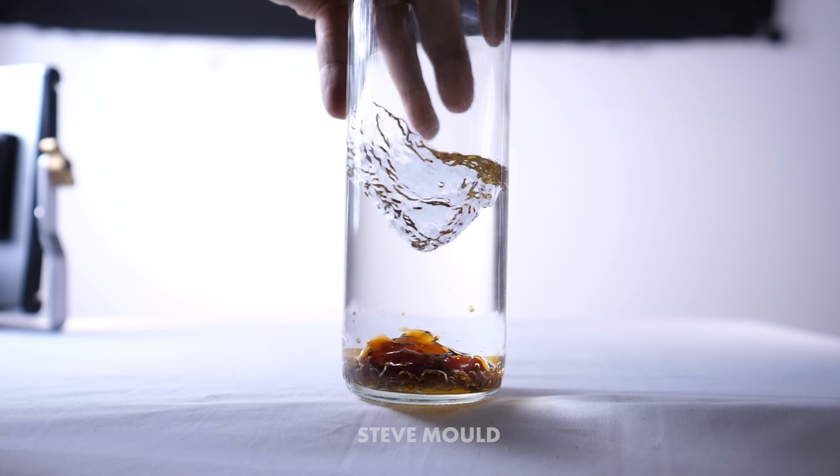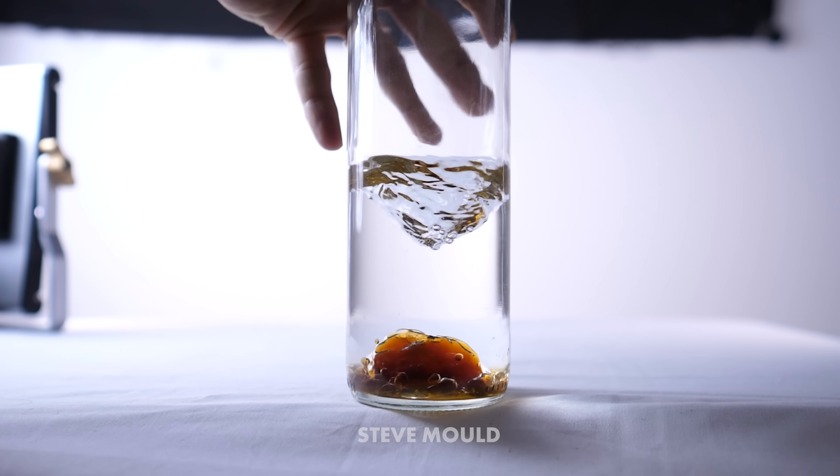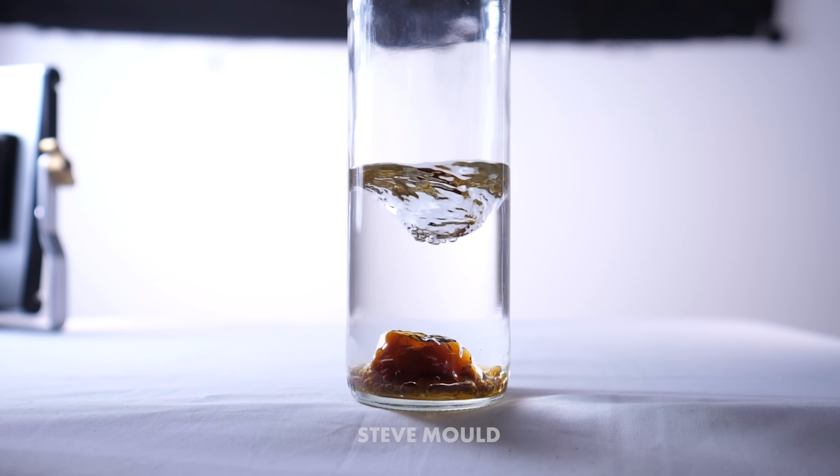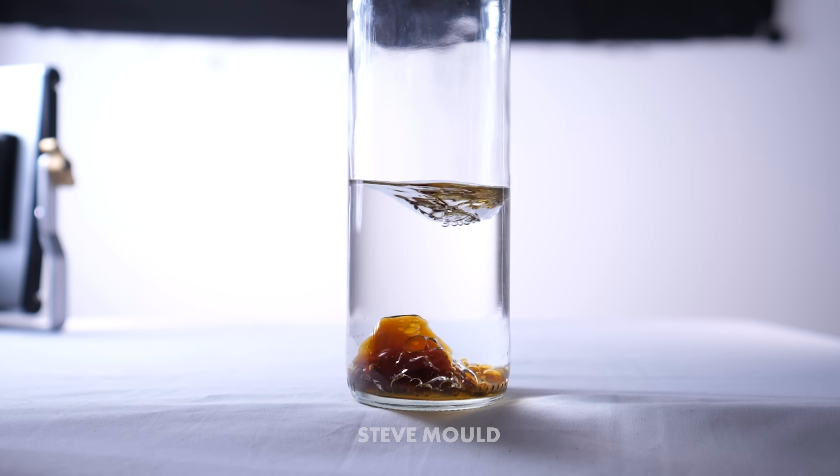The liquid at the bottom here is clearly more dense than the liquid on top. We know that because it has sunk to the bottom. But surely if it is more dense, then when we swirl the container, that more dense liquid at the bottom should be flung out to the sides. But instead, it seems to bunch up in the middle like an inverted whirlpool.